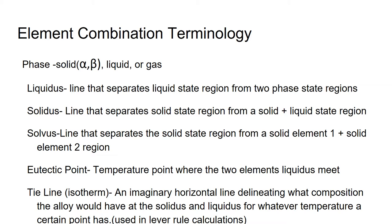The liquidus line separates the liquid state region from the two-phase state regions. The solidus separates the solid state region from the solid and liquid state region. And the solvus line separates the solid state region from a solid element one plus solid element two region. The eutectic point is the temperature point where the two elements liquidus lines meet. A tie line is an imaginary horizontal line which delineates what composition the alloy would have at the solidus and liquidus for whatever temperature a certain point has. This is typically used in lever rule calculations.